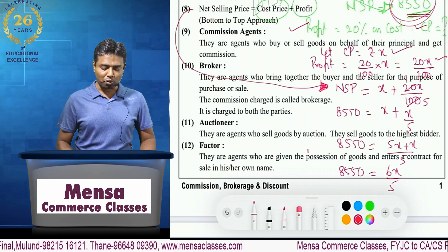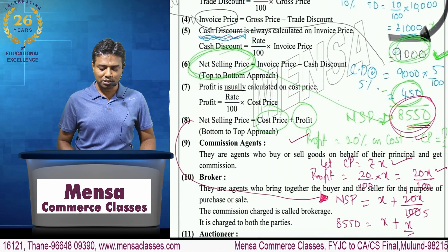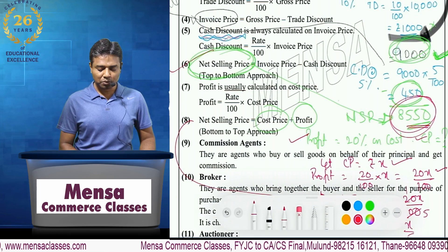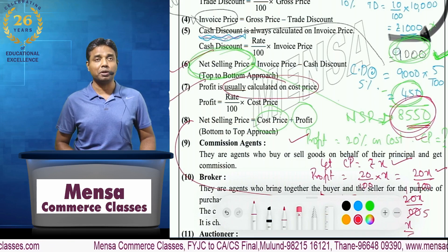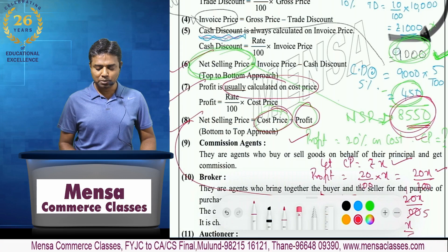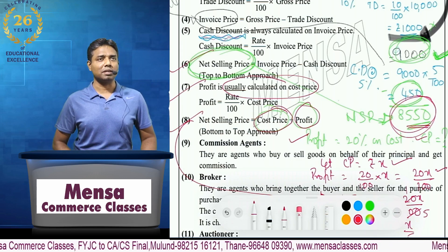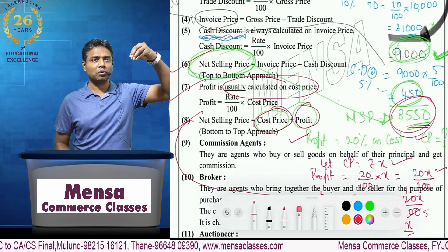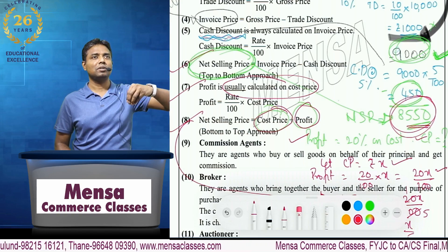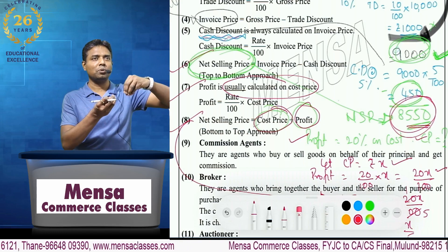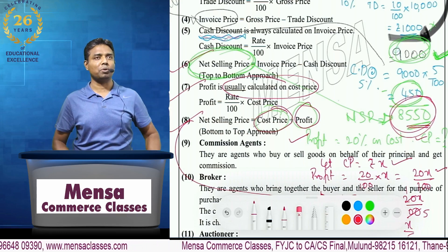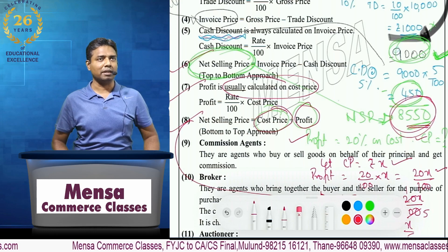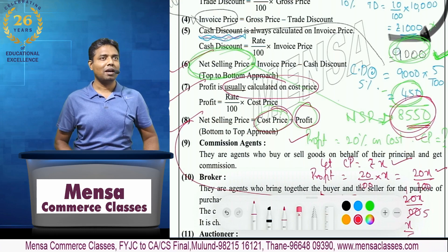This point jo humne likha hua hai is very very important. Net selling price = invoice price minus cash discount. Profit normally cost ke upar hota hai. Net selling price ke andar cost price plus profit hota hai. Toh aap kya kar sakte ho — gross price se trade discount minus karo, phir cash discount minus karo, toh net selling price aa jata hai. Ya, cost price mein profit add karo — aapko net selling price aa jata hai. So, that is a two-way approach to the questions.